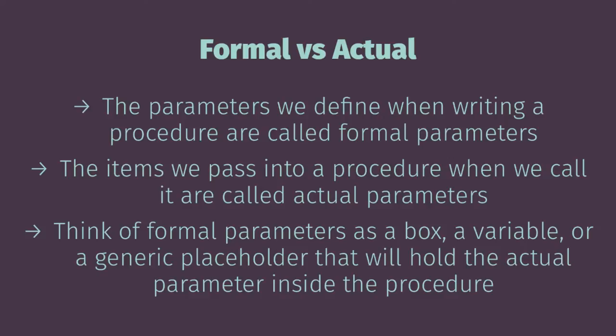Formal parameters only exist inside the procedure and allow users to pass data into it. The user can call the procedure with any variable name, but inside the procedure those values have the formal parameter names that we as the writer defined. The items the user is passing in externally are called actual parameters — that's what the user is actually putting in. It'll make more sense when we get to the coding piece. For example with an ATM machine: your card and my card are unique to each of us — those are actual parameters — but inside the machine it just knows the input as 'card' — that's the formal parameter.